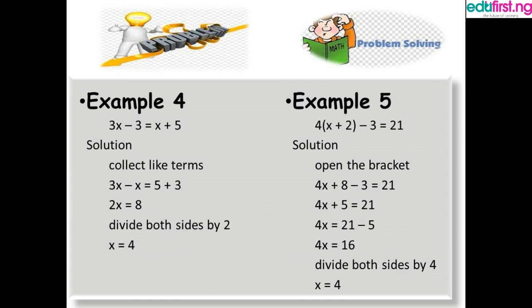To check: 3 multiplied by 4 is 12, minus 3 equals 9. On the right side, x plus 5 equals 4 plus 5 equals 9. So we can see that both expressions are equal — that is what a simple equation does. Now Example 5: 4 times the bracket x plus 2, minus 3 equals 21.